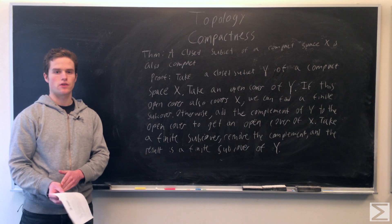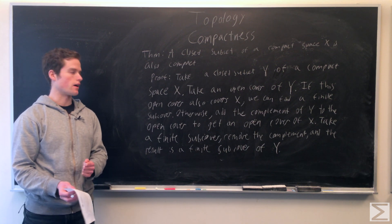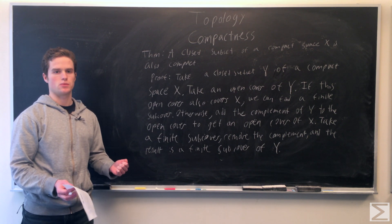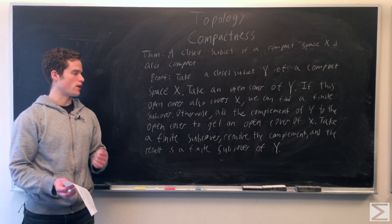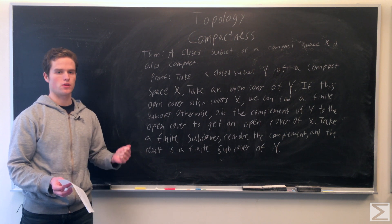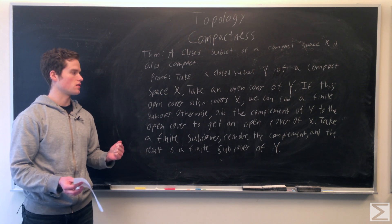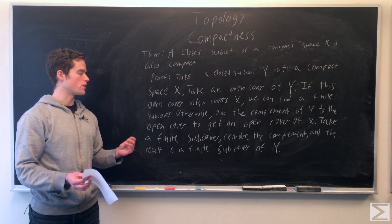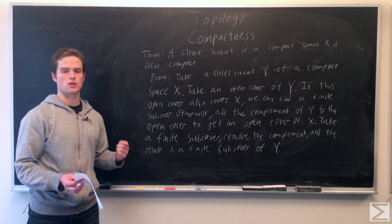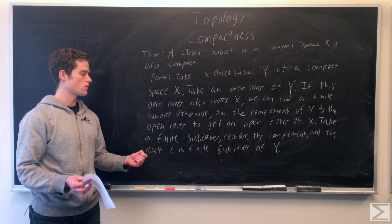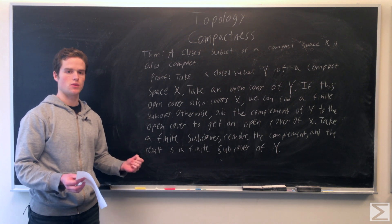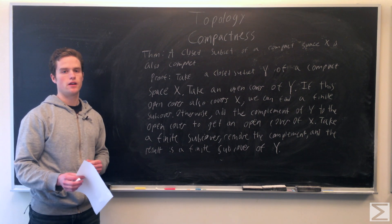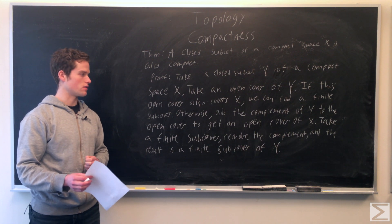Alternatively, if the cover does not cover X, we append the complement of Y in X to our open cover — all done in the subspace topology — giving us an open cover of X. We take a finite sub-cover of this open cover. Because the original open cover does not cover X, we must have the complement of Y in the finite sub-cover, otherwise some points in X would not be covered. So we have a finite sub-cover that covers all of X and includes the complement of Y.